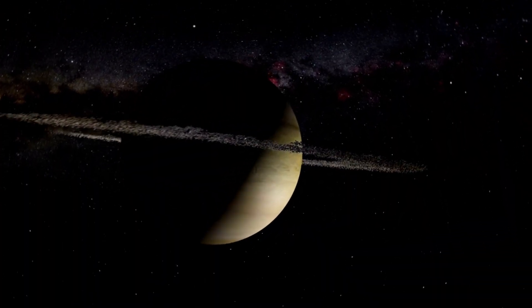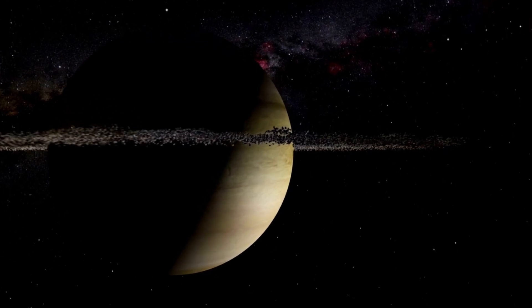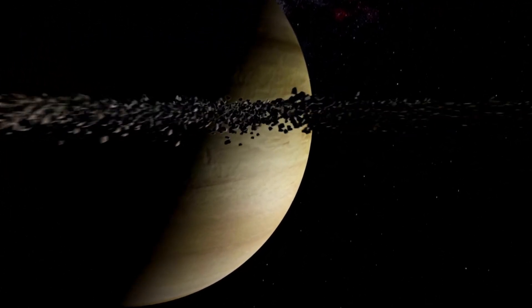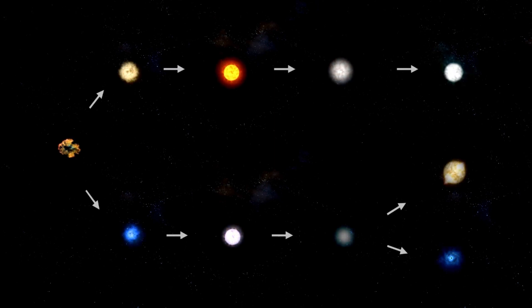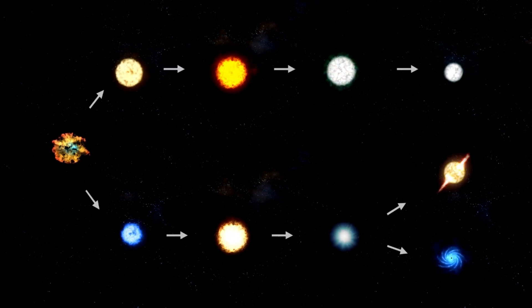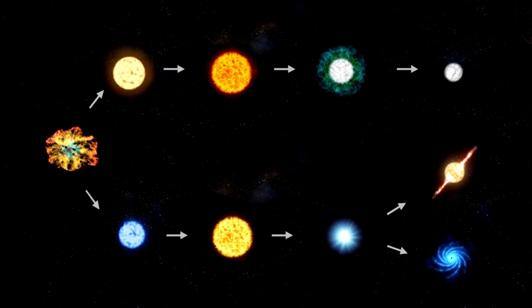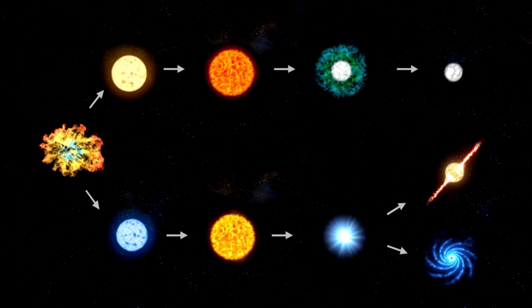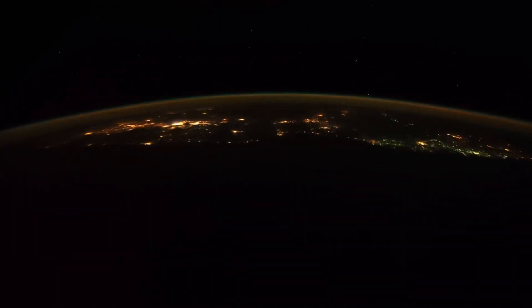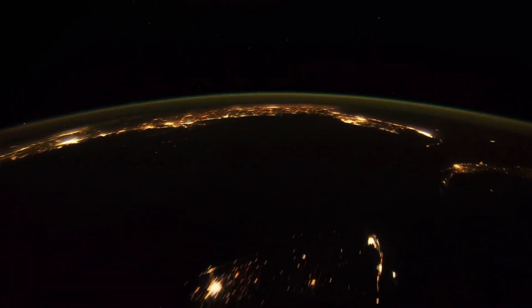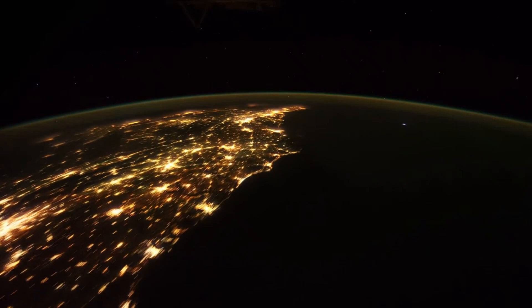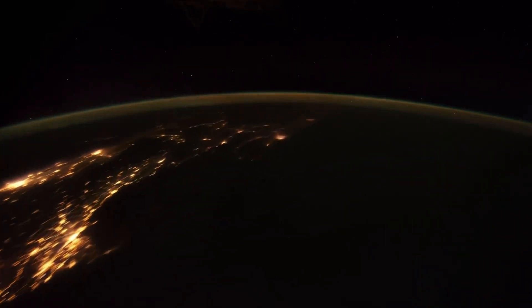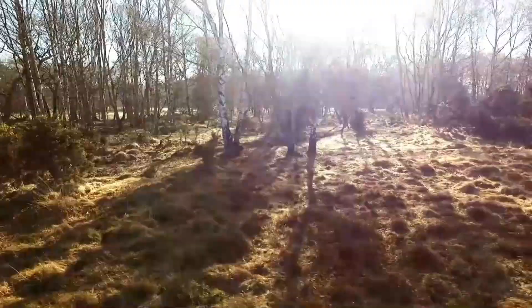One of its most striking features is the likelihood that it is tidally locked. This means one hemisphere of the planet permanently faces its star, basking in continuous daylight, while the opposite side is shrouded in perpetual darkness. This configuration creates severe environmental contrasts. The day side would be exposed to constant radiation and high temperatures, potentially leading to scorching barren landscapes, while the night side could descend into a deep freeze where temperatures might plunge well below freezing.